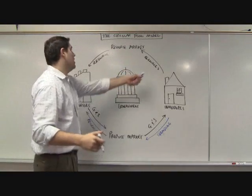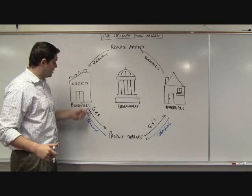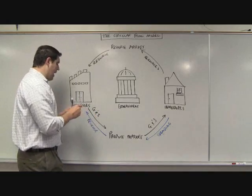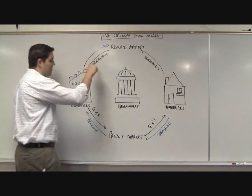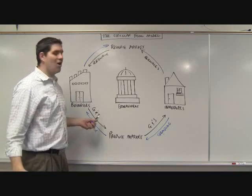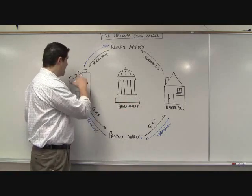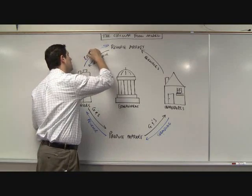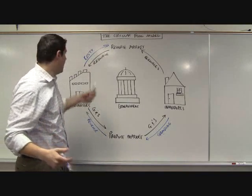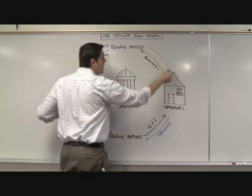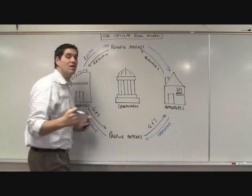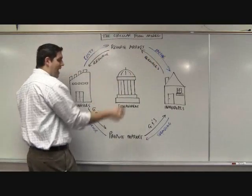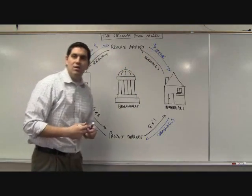Those resources make their way through the resource market to the firms. Those firms convert those resources into goods and services. But I don't work for free and you don't work for free, so they've got to give us money. Money coming out from the firm is not called revenue — this is spending by businesses. Let's call this cost: the costs of production. That money comes in to individuals, and you call it income.